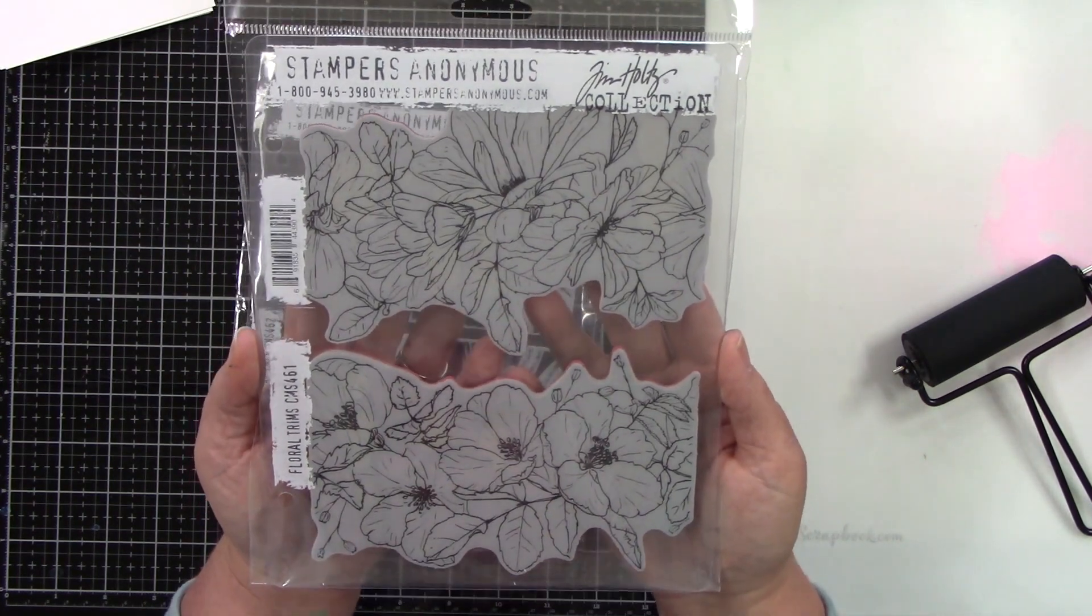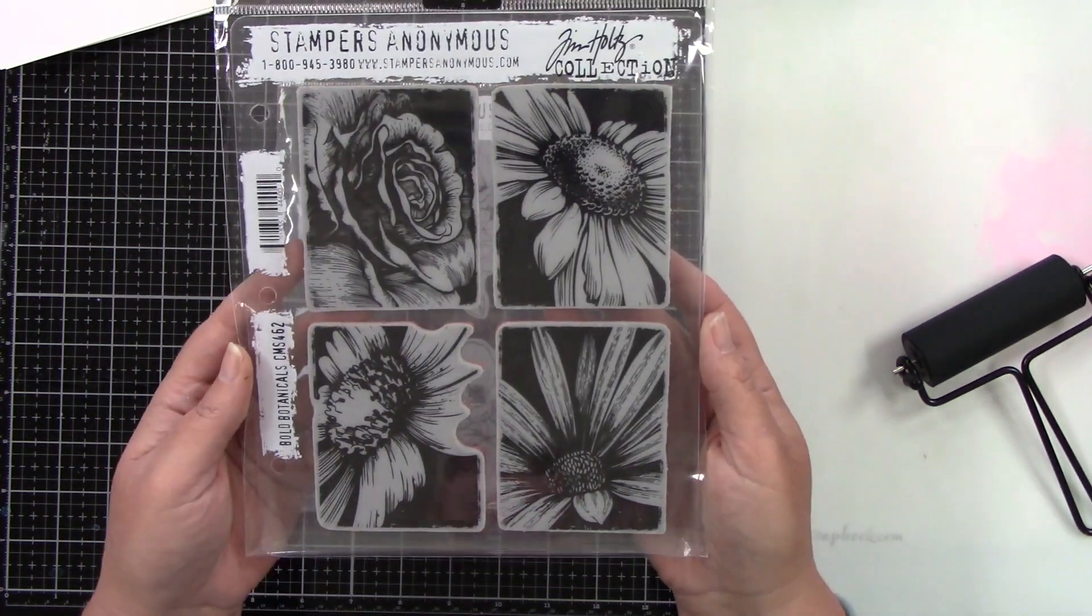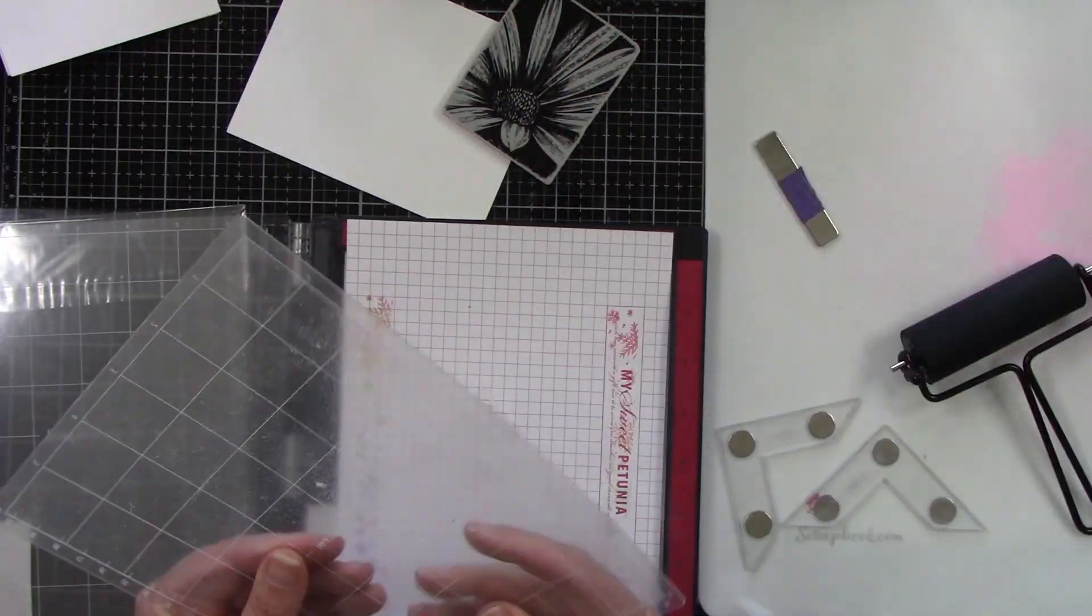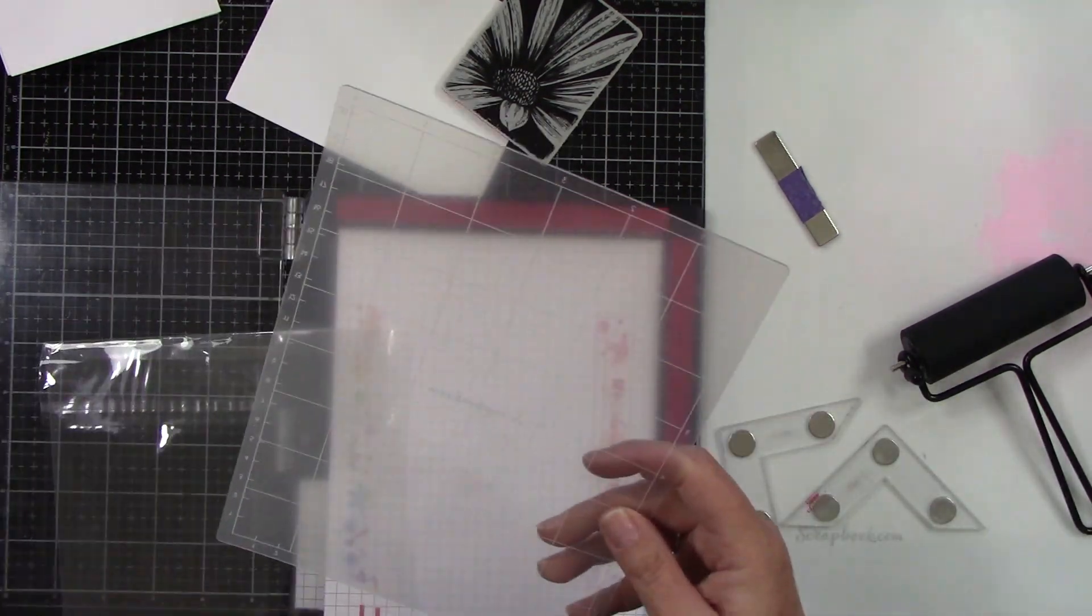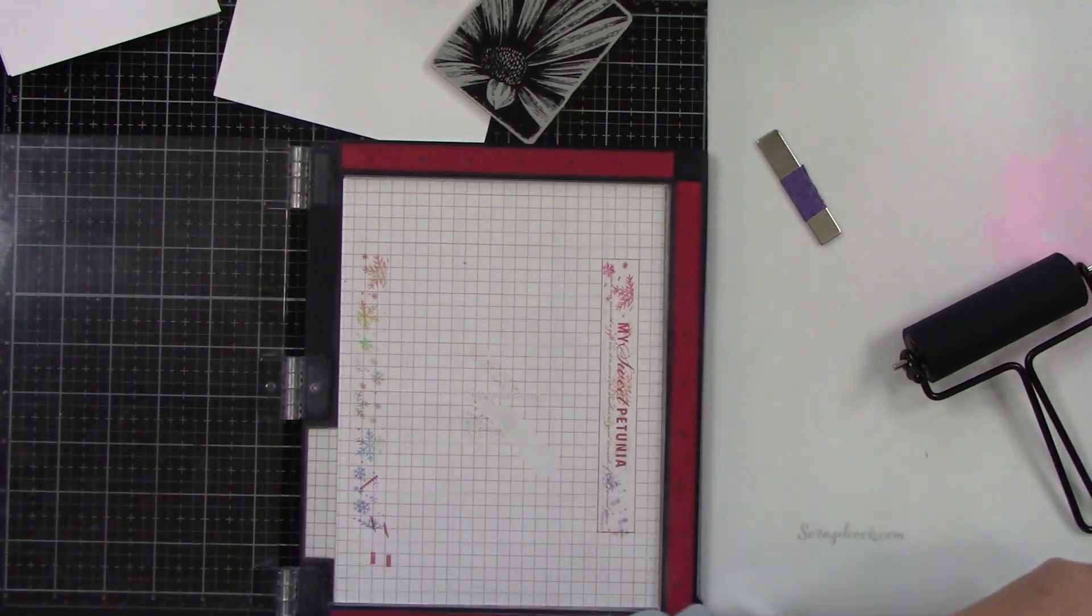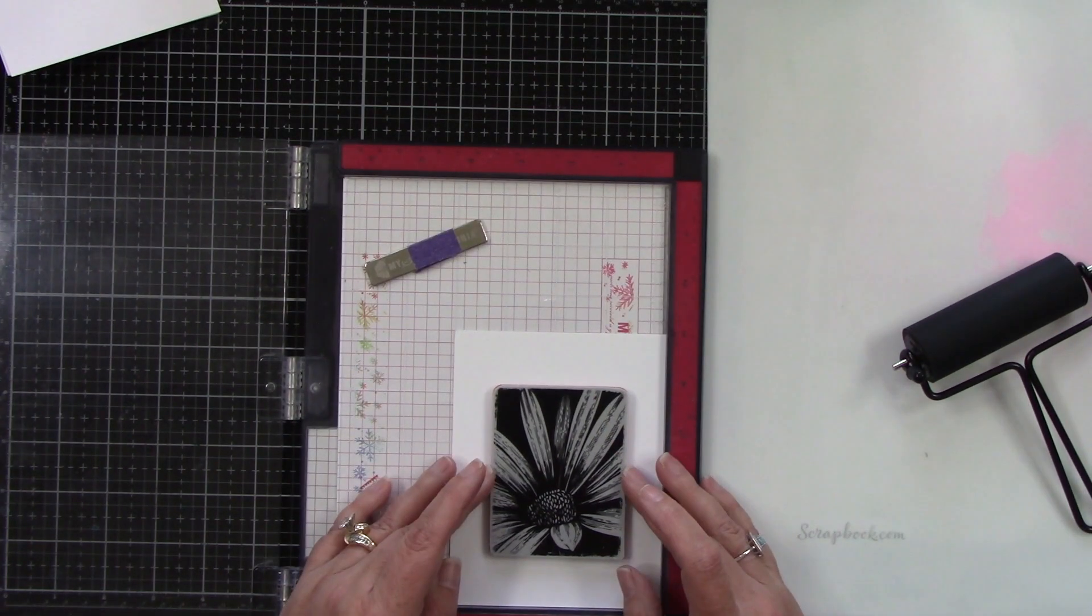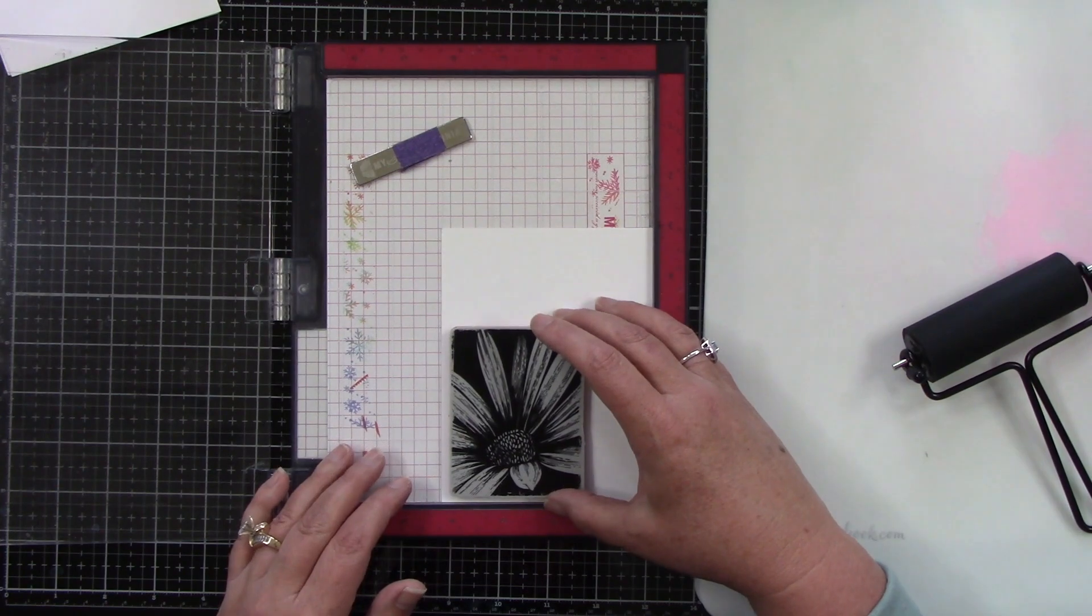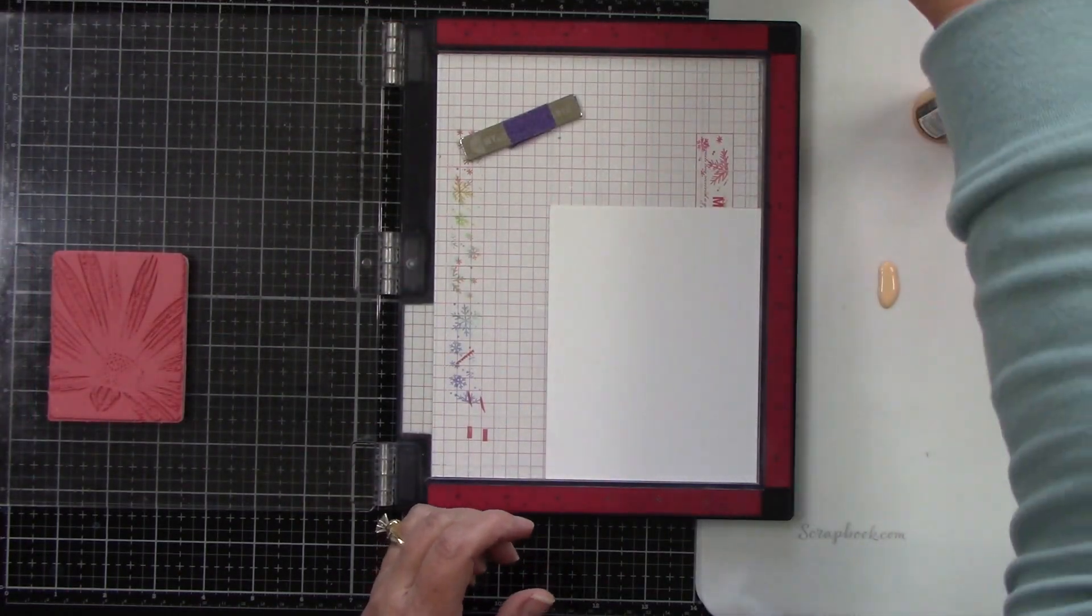I'm also using the fairly new release from Tim Holtz Stampers Anonymous. This is the bold botanicals and the other one was the floral trims. So this is what we're going to be using for our projects today. So in my Misti, I'm going to remove my little foam insert piece. And from scrapbook.com, I have their sticky mat and I'm going to place this in my Misti. This is going to help me keep my card panels in place. I still will probably use a little bit of a magnet just because paint can be sticky and I don't want anything to move.